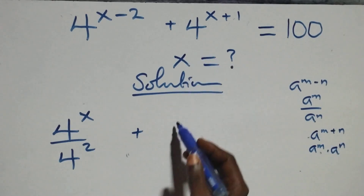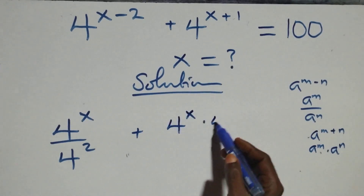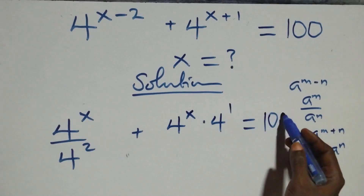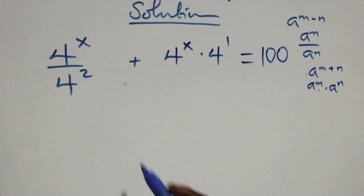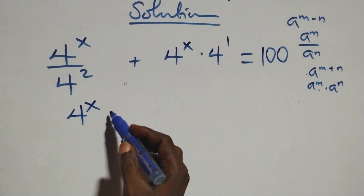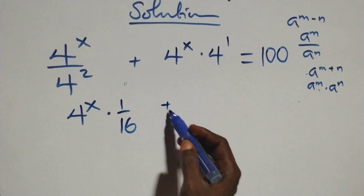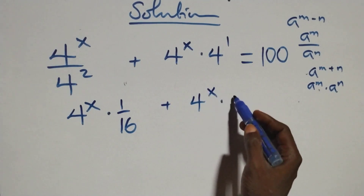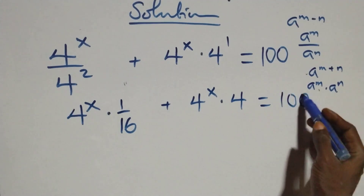This here becomes 4 raised to power x times 4 raised to power 1, then equals 100 on this side. The next step, we can write this as 4 raised to power x times 1 over 16, plus here we have 4 raised to power x times 4, then equals 100 on this side.